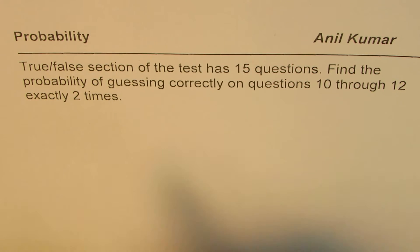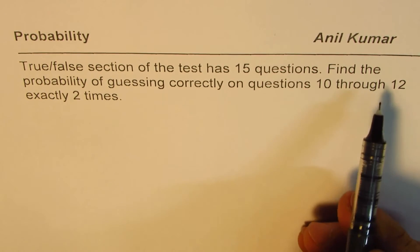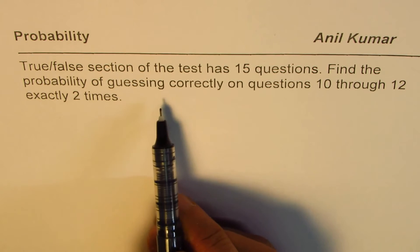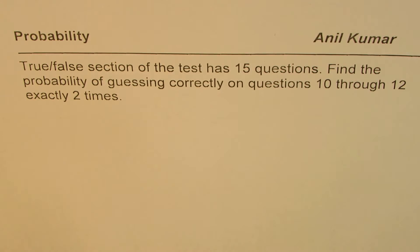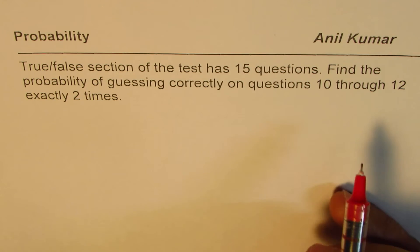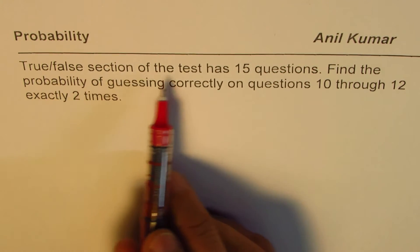Here is one: it says the true/false section of the test has 15 questions. Find the probability of guessing correctly on questions 10 through 12 exactly two times. That's the question. Normally you'll be given four choices, but in the new SAT you may not always get multiple choice questions — remember that.